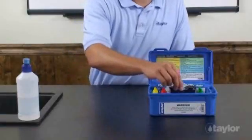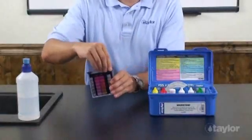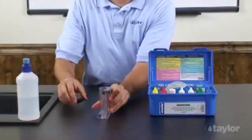To test total alkalinity, rinse and fill the large comparator tube to the 25 ml mark with the water to be tested.